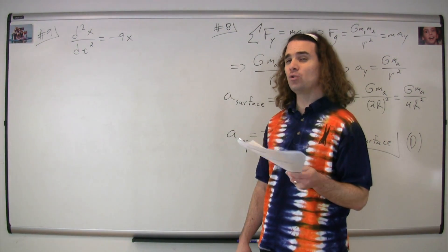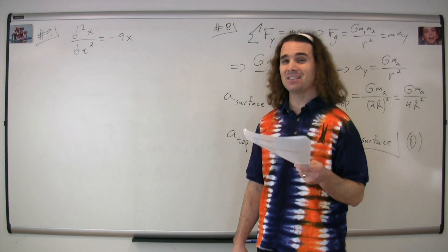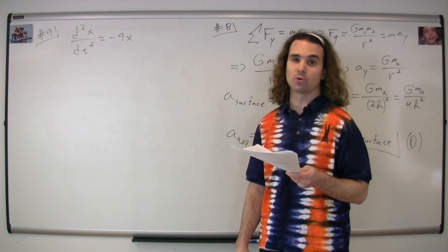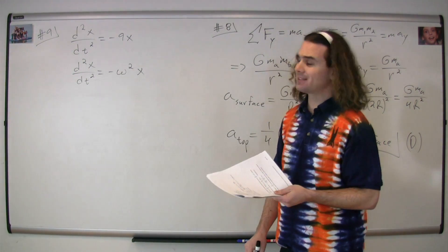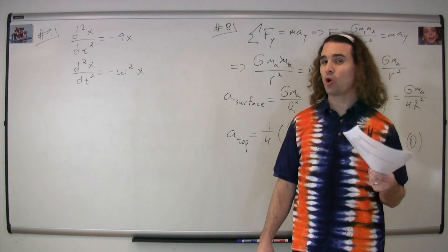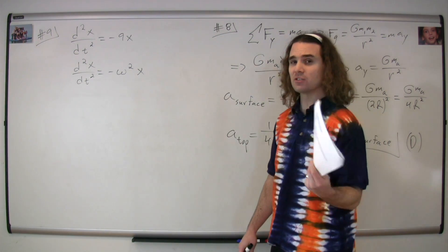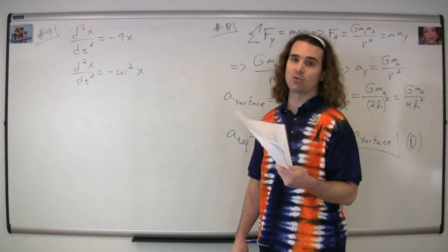In order to solve this problem, you need to remember the equation that defines an object in simple harmonic motion. That equation is that the second derivative of the position with respect to time is equal to negative times omega, which is the angular frequency squared, times the position, or x.